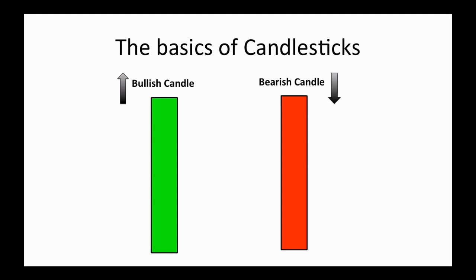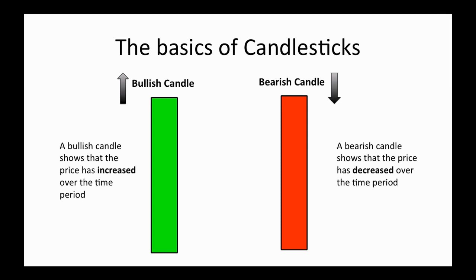On the left we have a green candle, which represents a bullish candle. Bullish simply means that the price increased over the time period. On the right, the red candle is bearish, which simply means that the price decreased over the period. Each fully formed candle represents the price action over a specific time period — so if you're looking at a 5-minute chart, each candle represents 5 minutes of price action. An hourly chart means each candle represents an hour's worth of price action, a daily chart each candle represents a day, and so on.